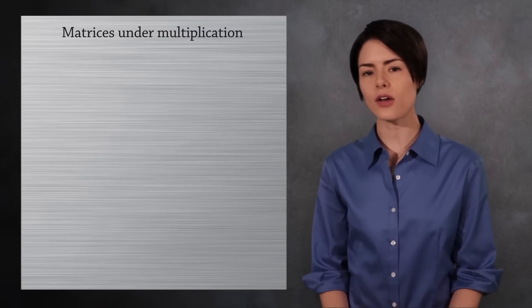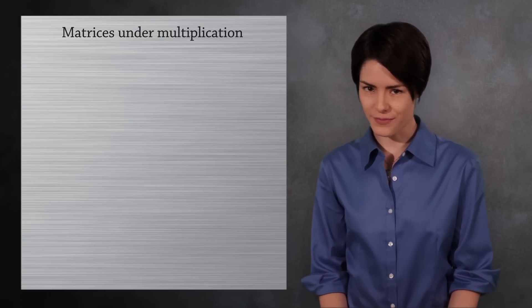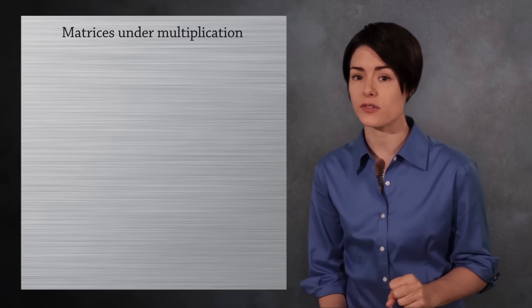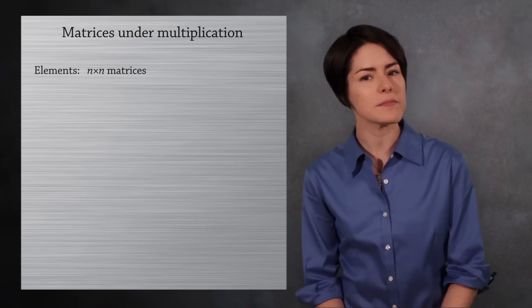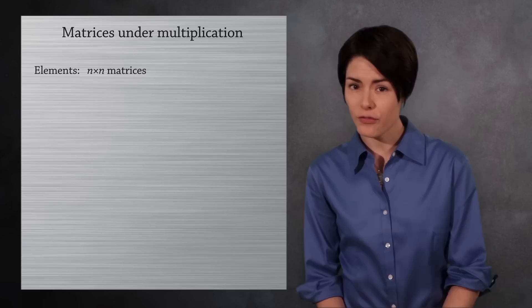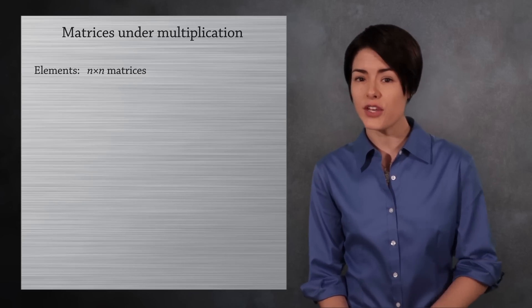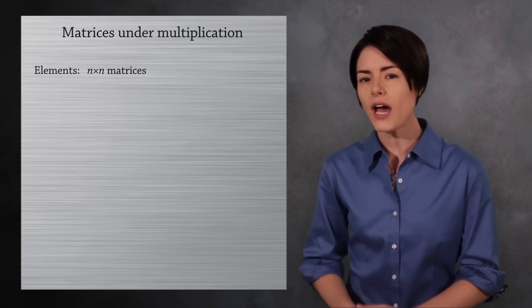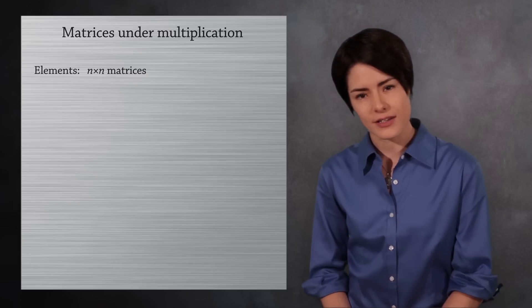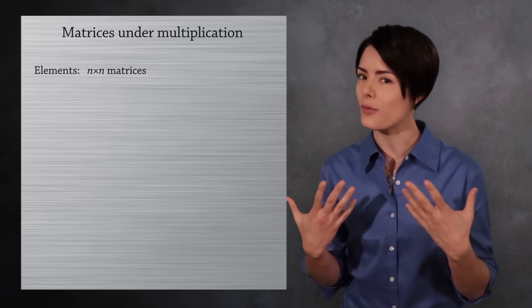Next, let's look at real matrices under multiplication. We want a collection of matrices which can be multiplied together. So we need to restrict our group to n by n square matrices. If we allowed non-square matrices, then you could find two elements which could not be multiplied together. We now have our elements and the operation. Let's now check the requirements of a group.